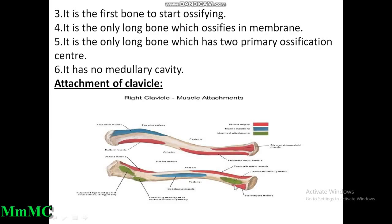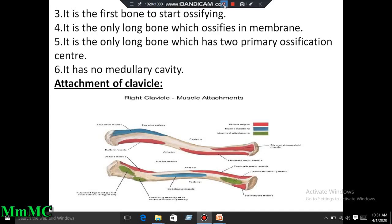The lateral part of the medial two-thirds of the inferior surface has a subclavian groove which gives insertion to the subclavius muscle. The margins of the subclavian groove give attachment to the clavipectoral fascia. The coracoclavicular ligament also attaches on the clavicle.